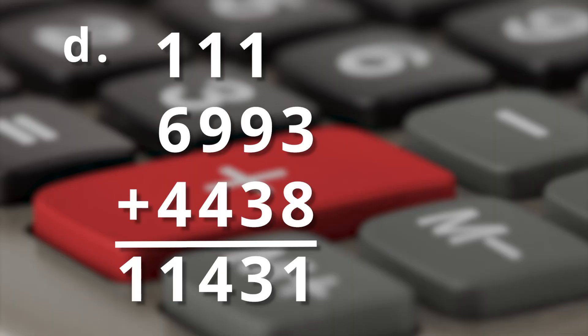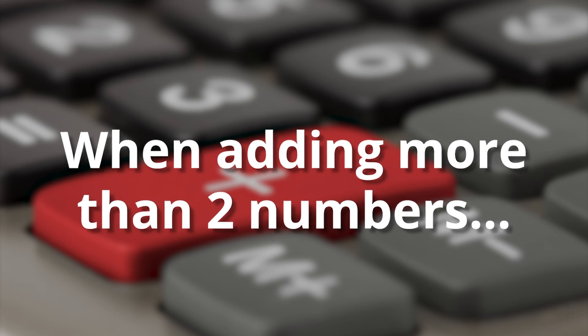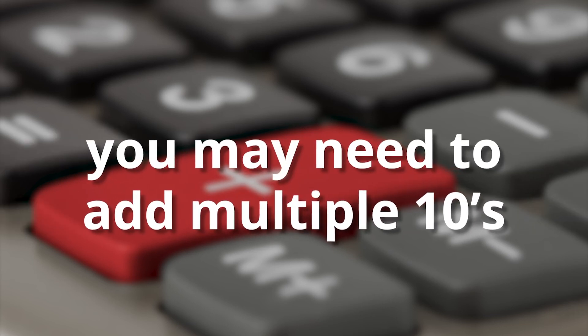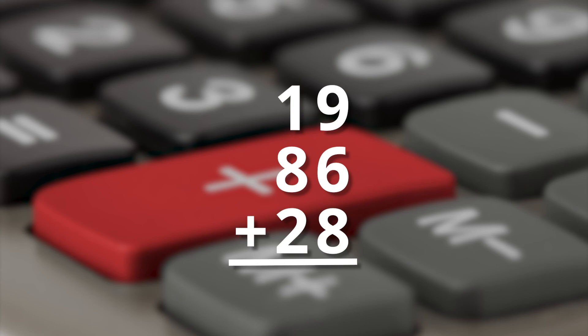Notice in example D, when you regroup the tens and the hundreds, the nines are changed to tens. And one more thing. If you're regrouping and you need to add more than two numbers, you might end up adding two tens, not just one. So in this example, nineteen plus eighty-six plus twenty-eight. See how when you add nine and six and eight, you get twenty-three.